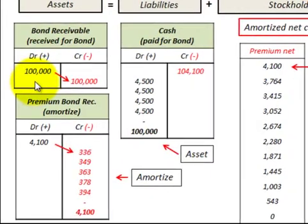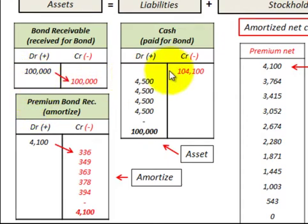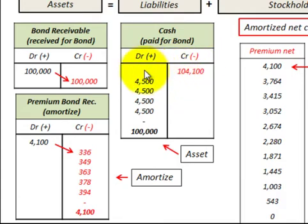We have a $100,000 face value bond with a 9% stated rate of interest, five years or ten semi-annual payments. In our cash account we paid $104,100 for that bond. That's based on the maturity value of $100,000 plus the interest payments discounted back using the market rate of interest, which in this case is 8% per year.